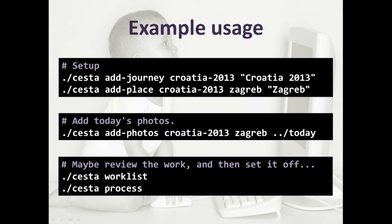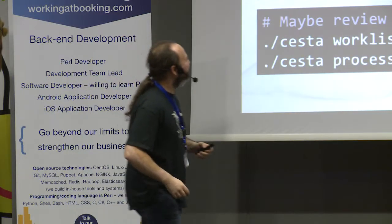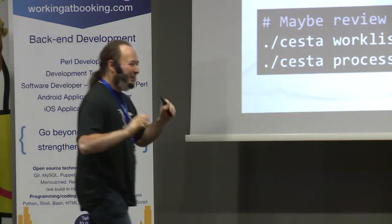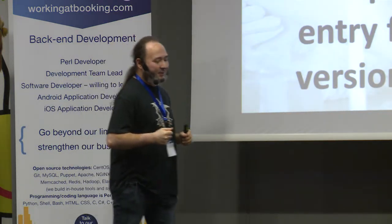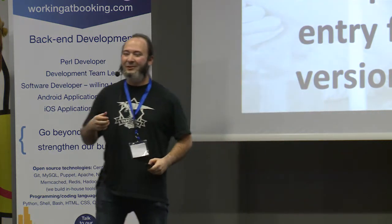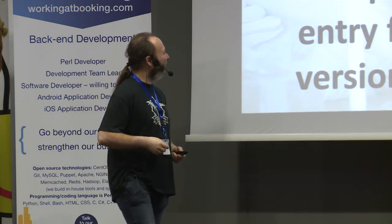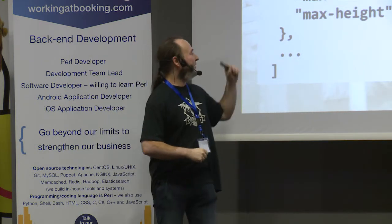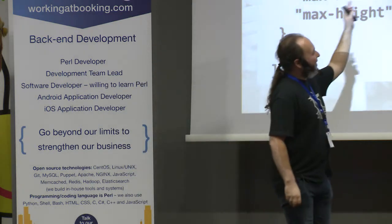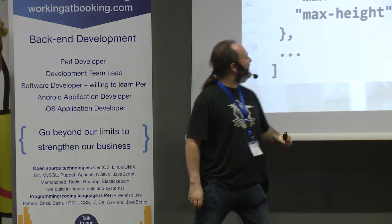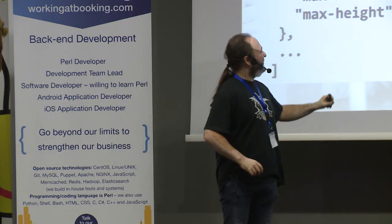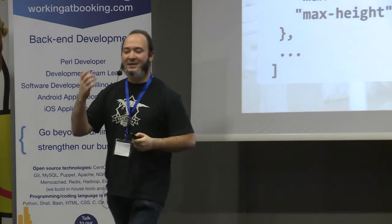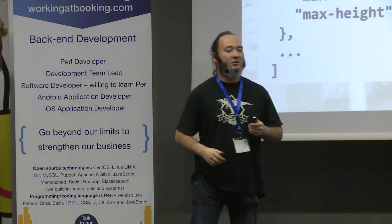Just the example usage: when I go travelling I add a journey, add a place, give it a name, then point it at the directory of photos. I can review the work list — the set of resizes and uploads it thinks it's going to do — and then say process, and it goes off doing the resizing, uploading, and all of that. The app is called Cesta — it's Czech and also Slovak, a language I actually know. The work list is a JSON file storing items of work: source file, full-size output, or resize with maximum width and height.